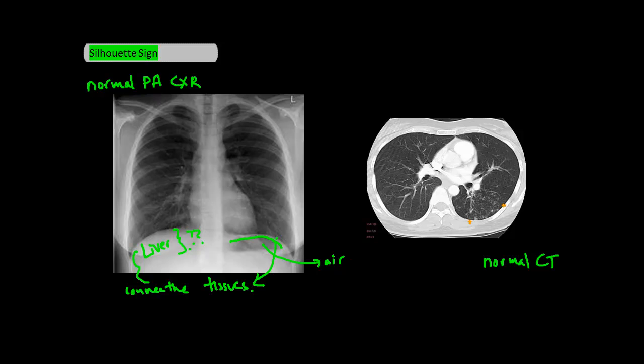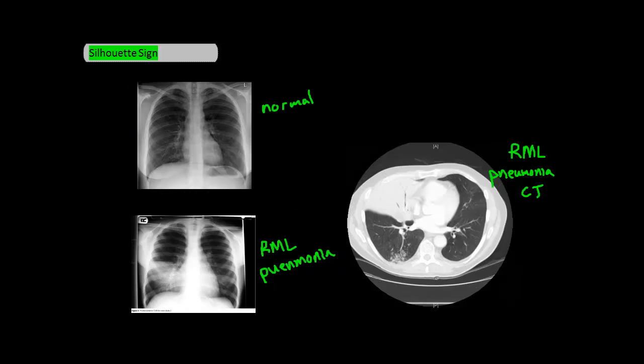Now I'm probably beating a dead horse by now, but that means that you probably understand how X-ray images are produced. Now for the main course: the silhouette sign.